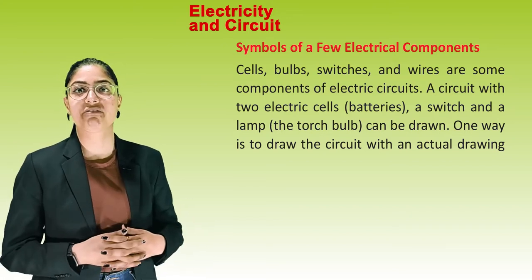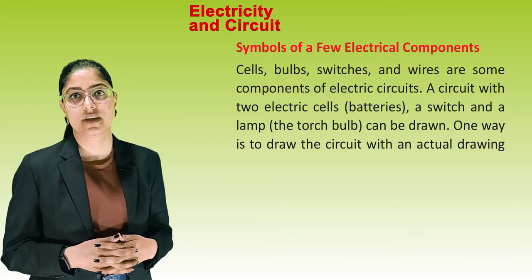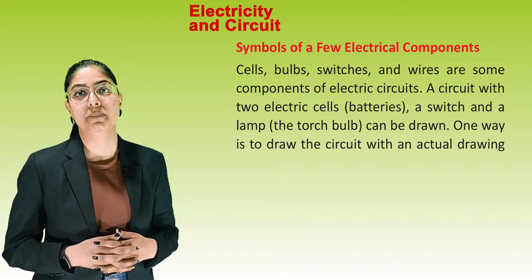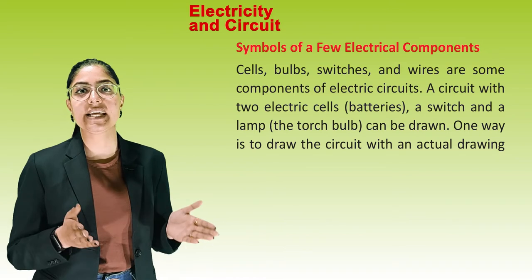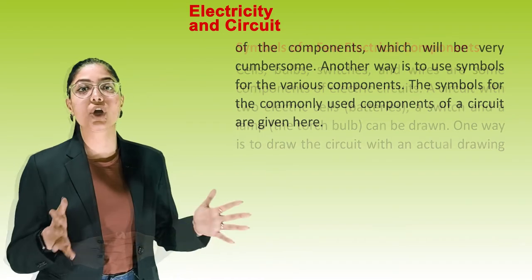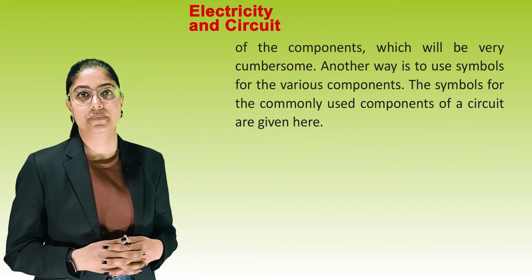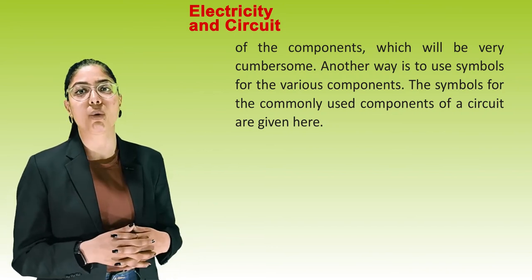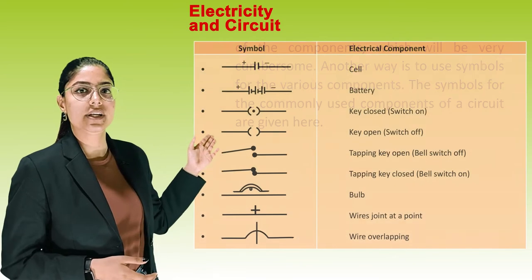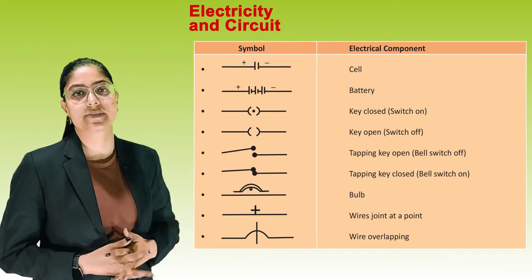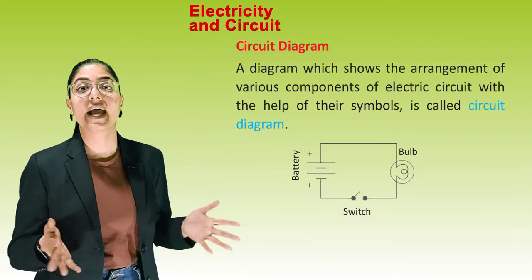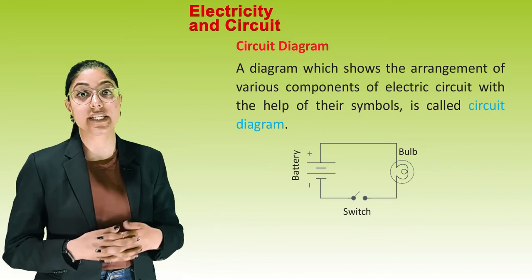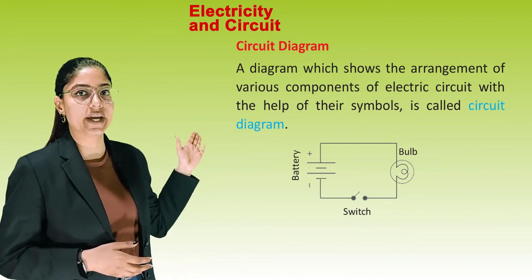Symbols of electrical components: cells, bulbs, switches, and wires are some components of electric circuits. A circuit with two cells, a switch, and a lamp can be drawn either with actual drawings of components, which is cumbersome, or using symbols. A diagram that shows the arrangement of various components of an electric circuit with the help of their symbols is called a circuit diagram.